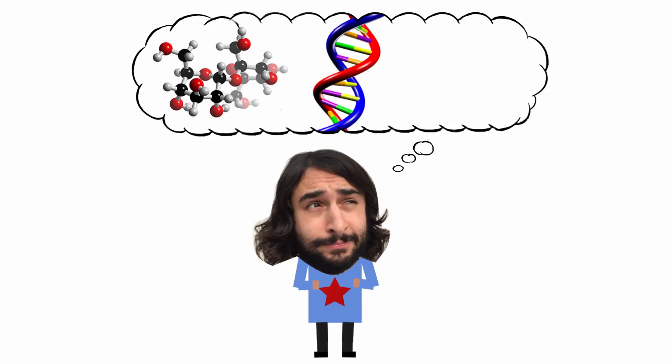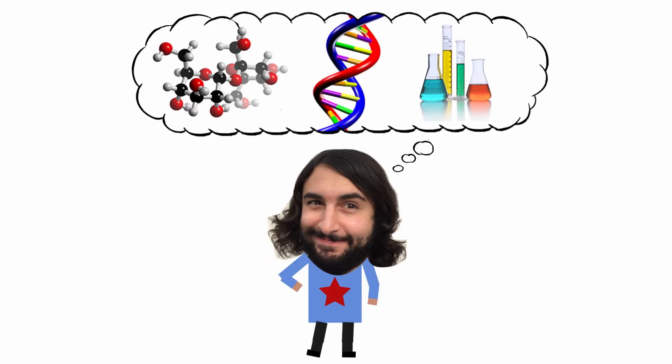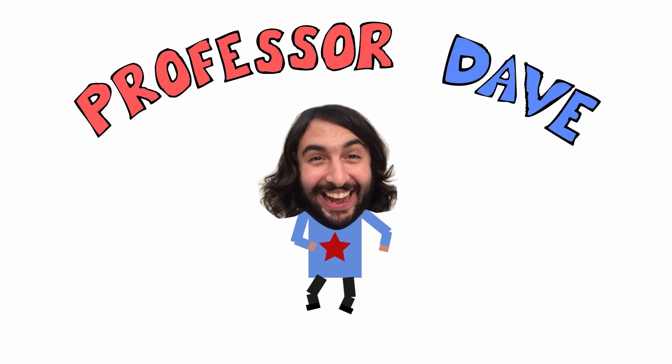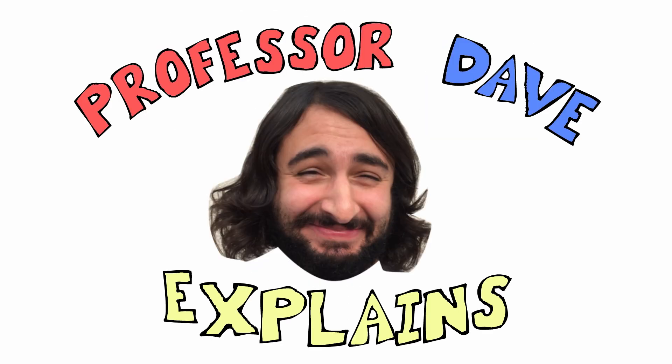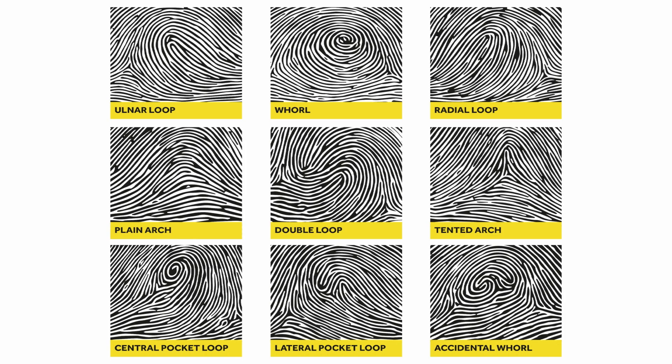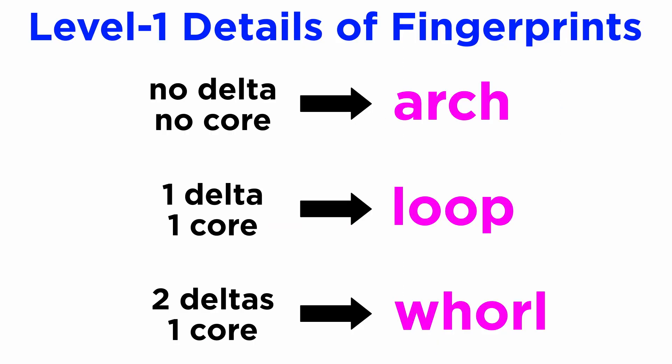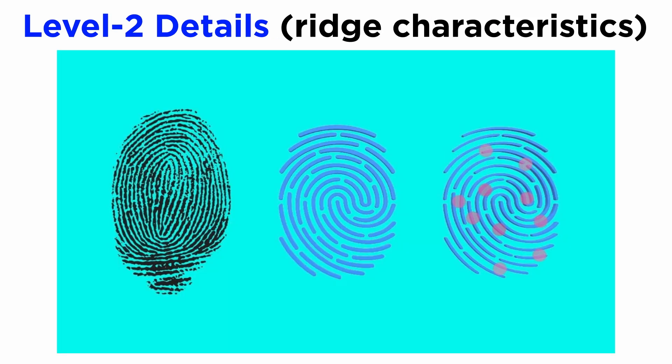Professor Dave Explains. In the previous tutorial, we learned how to identify a fingerprint pattern. Identification of a fingerprint by categorizing their ridge flow into different patterns, such as arches, loops, and whorls, are known as level one details of a fingerprint.